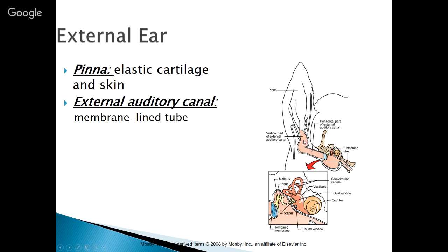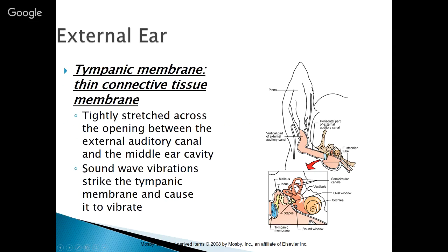Inside the pinna, we have the external auditory canal — a membrane-lined tube. We can damage this sensitive membrane, which is why excessive Q-tip cleaning is discouraged. Over time, repeated infections can thicken this membrane and close down the tube. There is a vertical portion and a horizontal portion of the external auditory canal. Then we have our tympanic membrane — our eardrum — a thin connective tissue membrane tightly stretched across the opening between the external auditory canal and the middle ear cavity. Sound wave vibrations travel through the air and strike the tympanic membrane, causing it to vibrate.